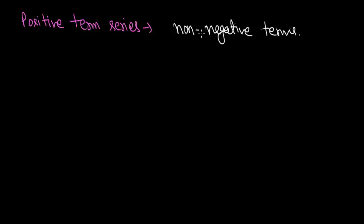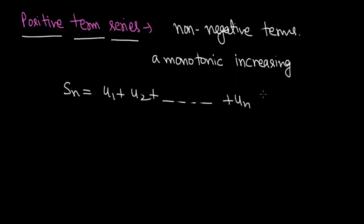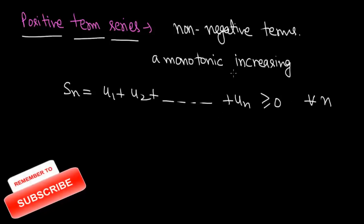Next is the positive term series. In a positive term series, all the terms are non-negative. If a series has only non-negative terms, it is called a positive term series, and it is a monotonically increasing series. For every n, uₙ ≥ 0 — all terms are non-negative.